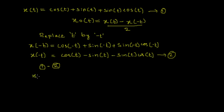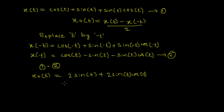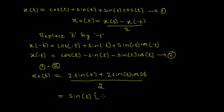To find the odd part, I subtract equation 2 from equation 1 and divide by 2. Cosine(t) minus cosine(t) cancels. Sine(t) minus (-sine(t)) gives 2 sine(t), and similarly we get plus 2 sine(t)·cosine(t), all divided by 2. Factoring out sine(t), the odd part xo(t) equals sine(t) times (1 plus cosine(t)).